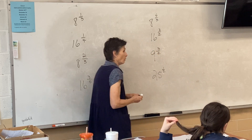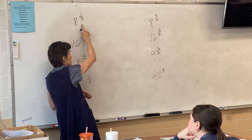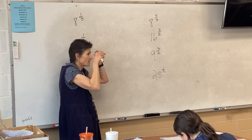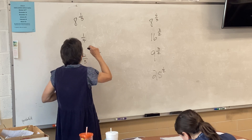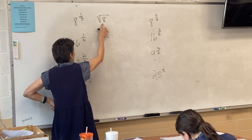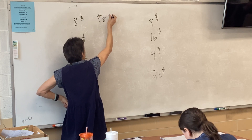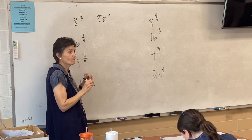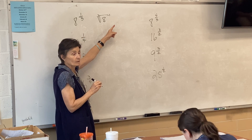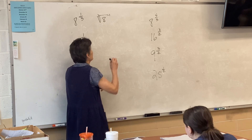We're going to do this with no calculator. What we need to remember is that fractional exponents mean radicals. This is going to be a radical — under the radical goes the number. The fraction gives you the root and the power. So this is the cube root of eight, which is two to the first, which is two.